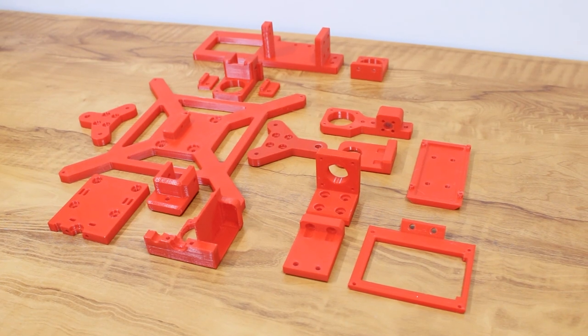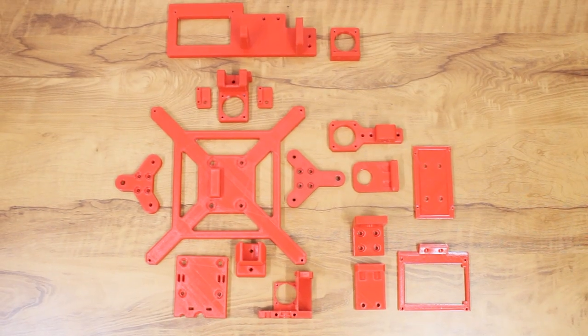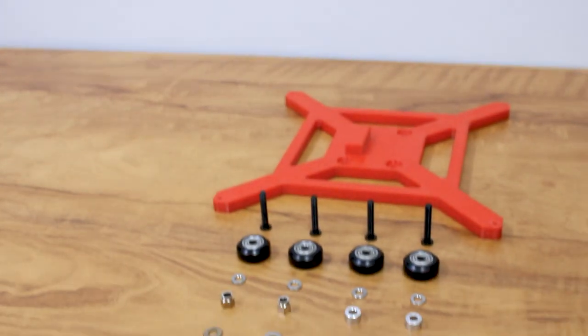These are the 3D printed parts we are going to use. All the file links are available in the video description. We can start with the Y axis carriage plate.